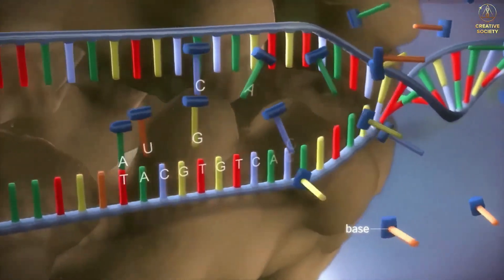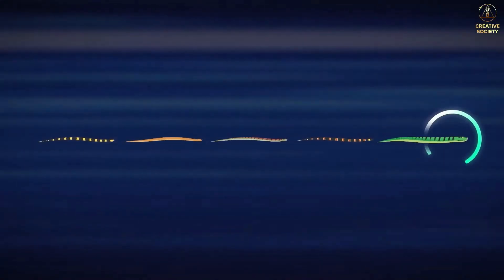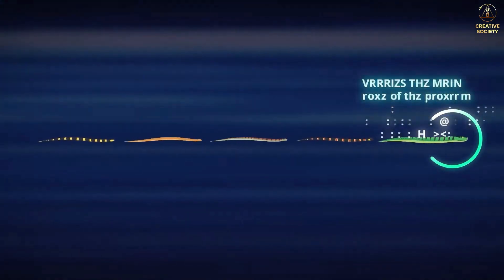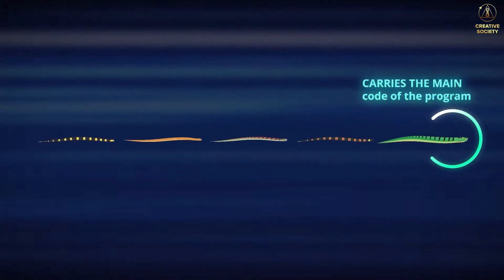Just like in DNA, every fragment is in its place. The first snake in the sequence has a specific role. It is a carrier of information about the whole tangle and carries the main code of the program.